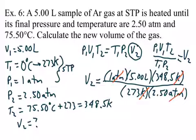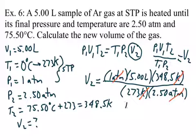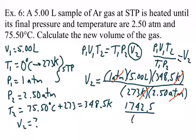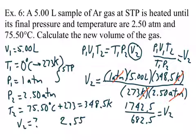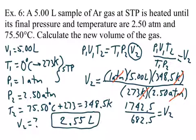The numerator is 1742.5 and the denominator is 682.5. Dividing and rounding to three significant digits gives a final volume of 2.55 liters. That is the answer to this combined gas law problem.